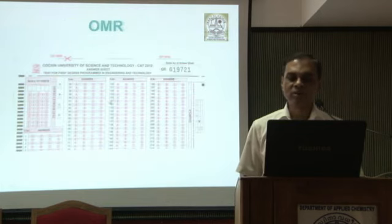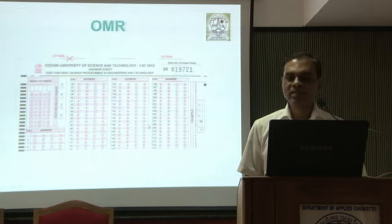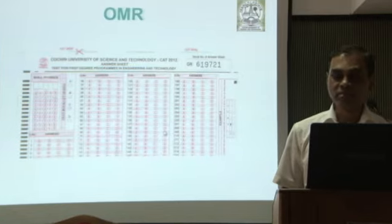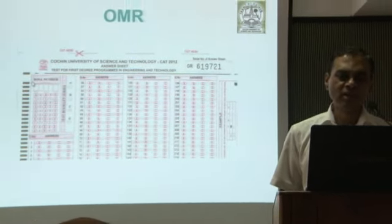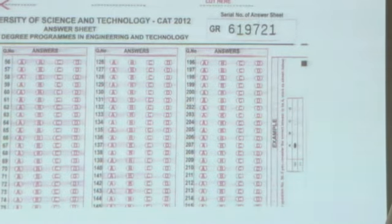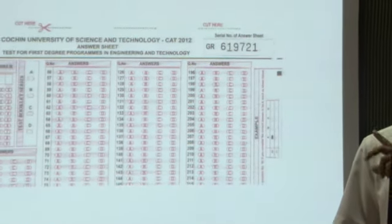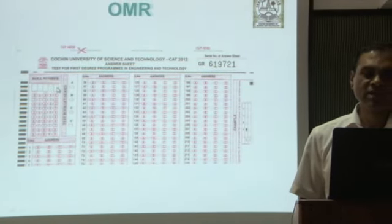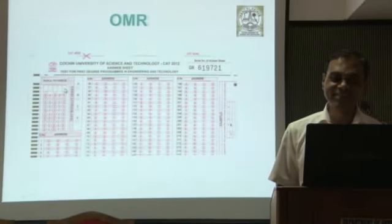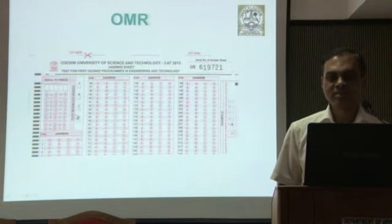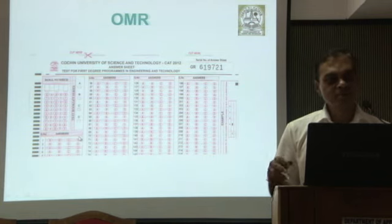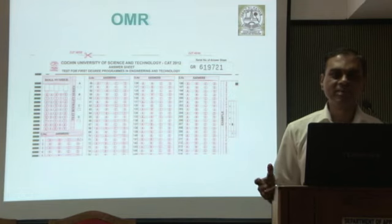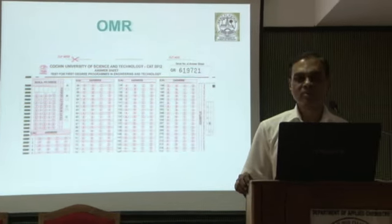This is how the new OMR looks. Many unnecessary details from last year have been removed — venue details, center code, etc. Now the student only needs to write the roll number, which is a 5-digit number starting from 51. The critical field is where he writes the question booklet series code: A, B, C, or D. He must invariably mark this. Despite repeat warnings, people still forget to write the question booklet code.